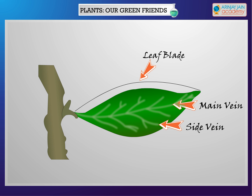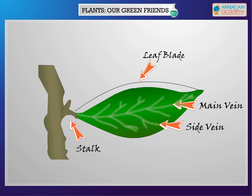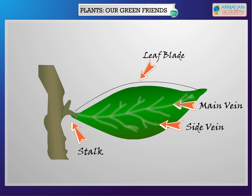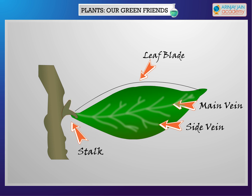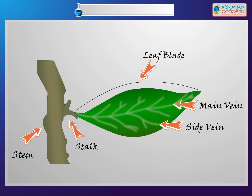They carry water and minerals to the leaf, and prepared food from the leaf to the other parts of the plant. The stalk attaches the leaf to the plant. It is also called the petiole.